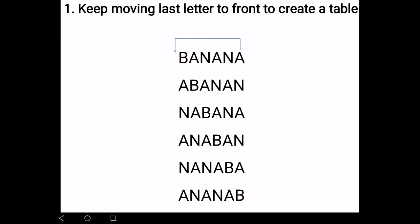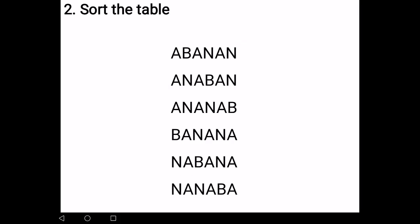There you have it. And then the second step is you sort the table, starting from the left column. First, you start A, A, A, B, N, N. If the A's on the first column are the same, then you compare the second column. B comes first, before N, the third column, and fourth column, so on and so forth. Then you have the sorted table.